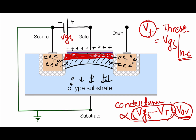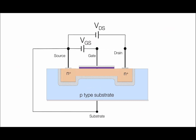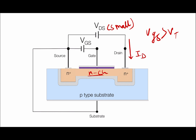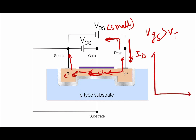Now you can understand how this n-channel is created in a p-type substrate. Since the channel is already created, if we connect a voltage source to the drain to source terminal, current will flow. Here you can see I have connected voltage source VDS along with VGS, where VGS is greater than VT, so the n-channel is already created. When we apply a small VDS, electrons flow through the n-channel and a drain current ID flows through this channel.